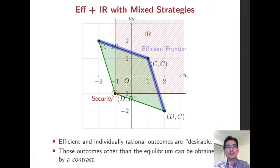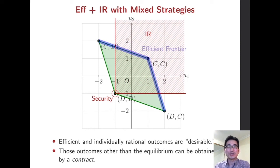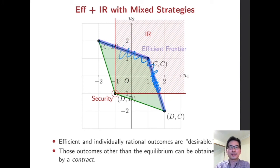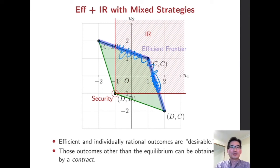As before, efficient and individually rational outcomes are desirable. In equilibrium they will choose D and D, but they can obtain other desirable outcomes through, for instance, a contract. If player 1 has more bargaining power, they may end up with outcomes favorable to player 1. If player 2 has more bargaining power, they may end up with outcomes favorable to player 2. If they have equal bargaining power, they may agree on an intermediate point.